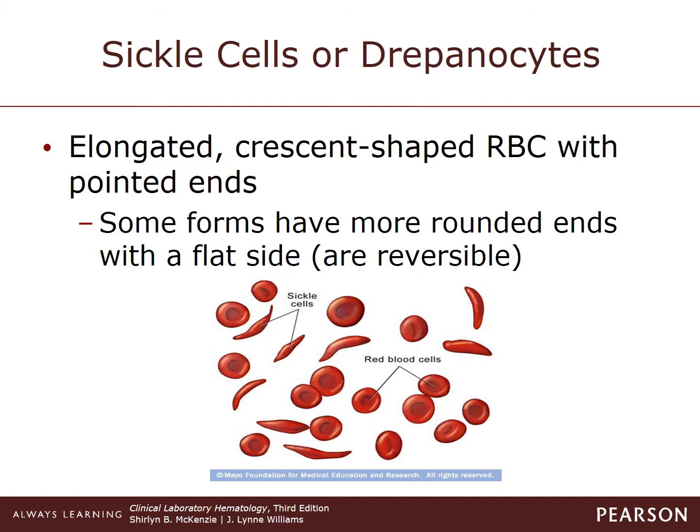Gradually, the cells turn into a holly leaf shape and over time transform into the irreversible sickle shape. If they are present, it is significant. There is no need to enumerate — you just say drepanocytes are present.